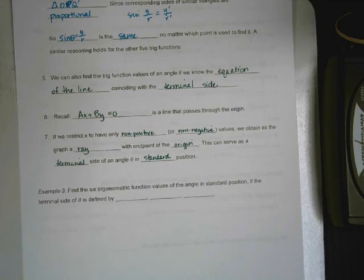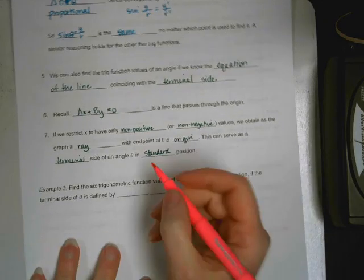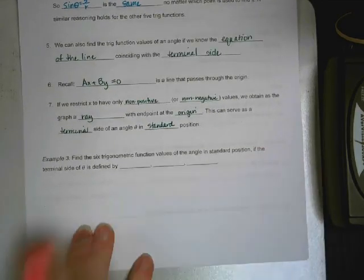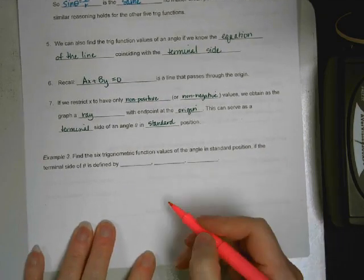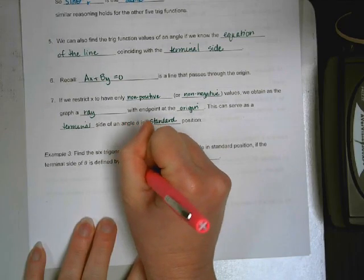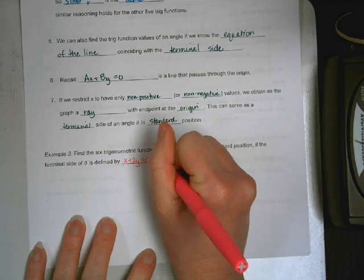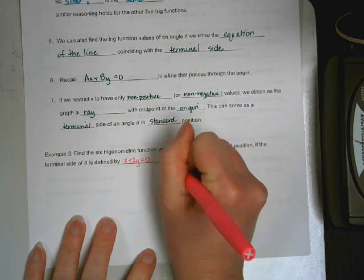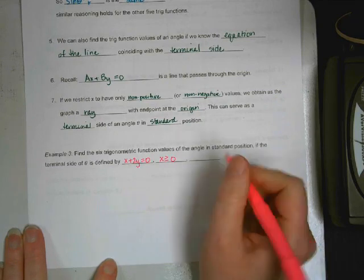I know that's a lot of words, but we're going to do one, and it'll make sense. Alright, so, we're going to find the six trigonometric function values of an angle in standard position if the terminal side of theta is defined by X plus 2Y equals 0, and X is greater than or equal to 0. So, I'm going to draw a picture.